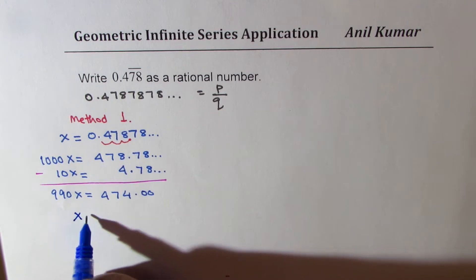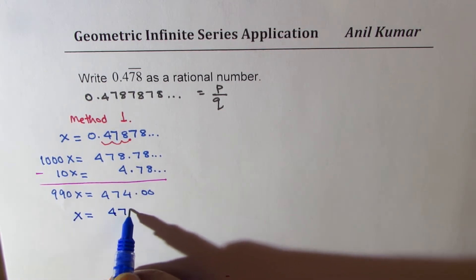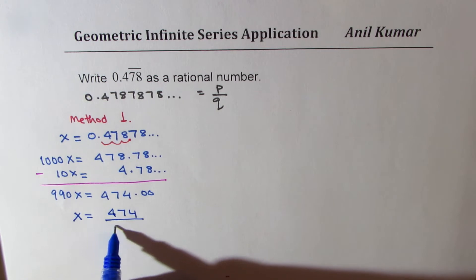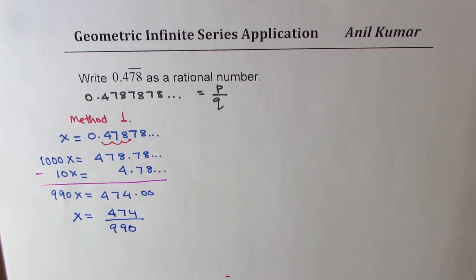Now it is simple. We can write X as equal to 474 divided by 990. Perfect. Now this could be simplified. This can be divided by 9, and the numerator, we can also divide.